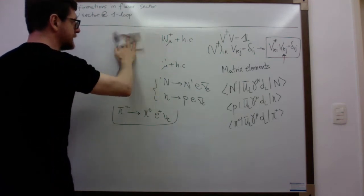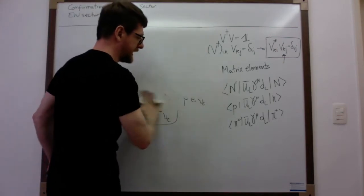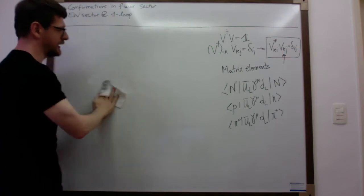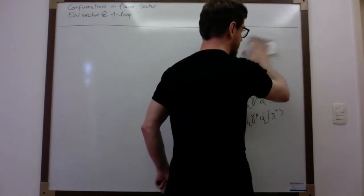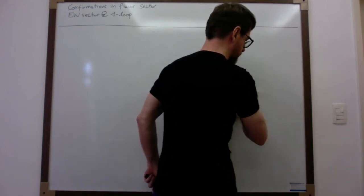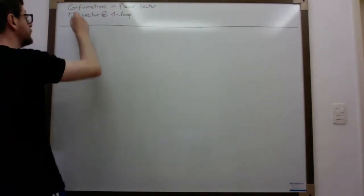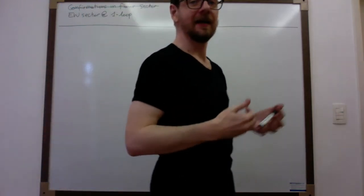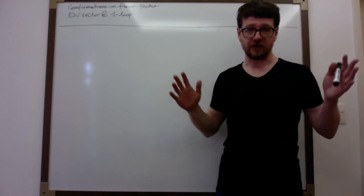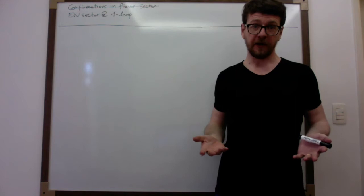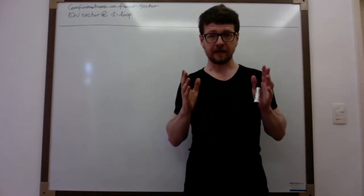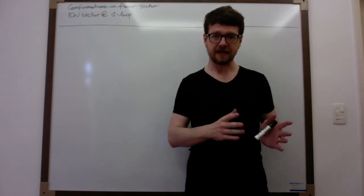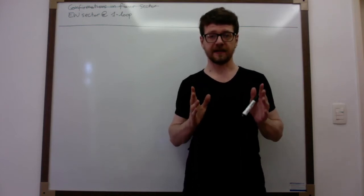So what I want to discuss now are the predictions at loop level in the flavor sector, and I'm going to leave for the next video the discussion of the predictions at loop level in the electroweak sector. They're both delicate subjects and I don't want to propose too much in just one lecture. We have concluded our discussion of the confirmation of the flavor sector at tree level. Now let's jump to the predictions at loop level — it is at this point that actually the standard model will triumph.